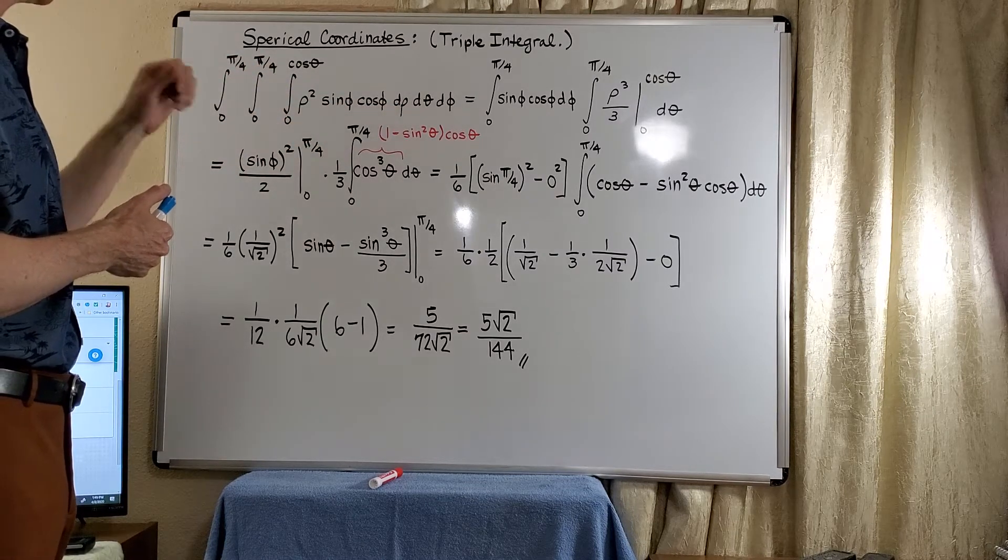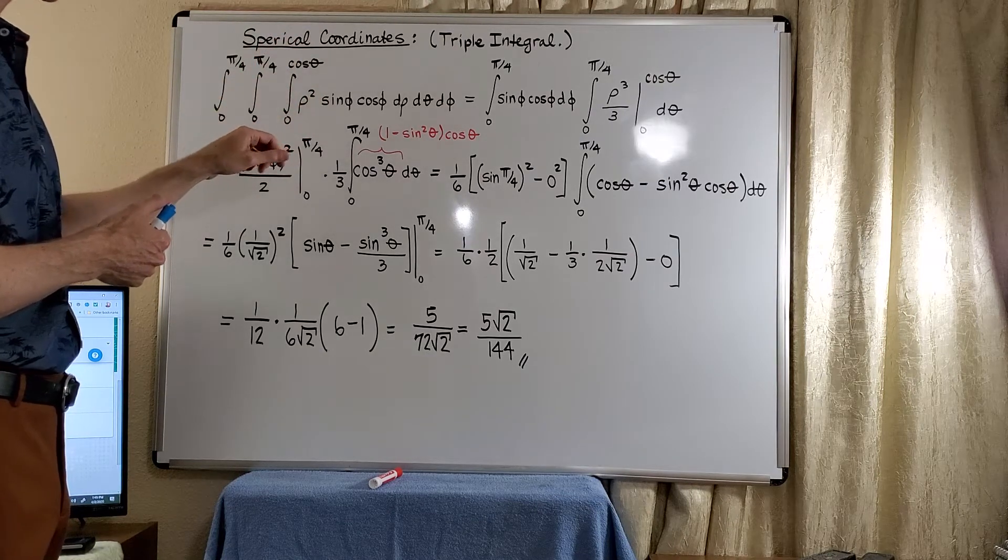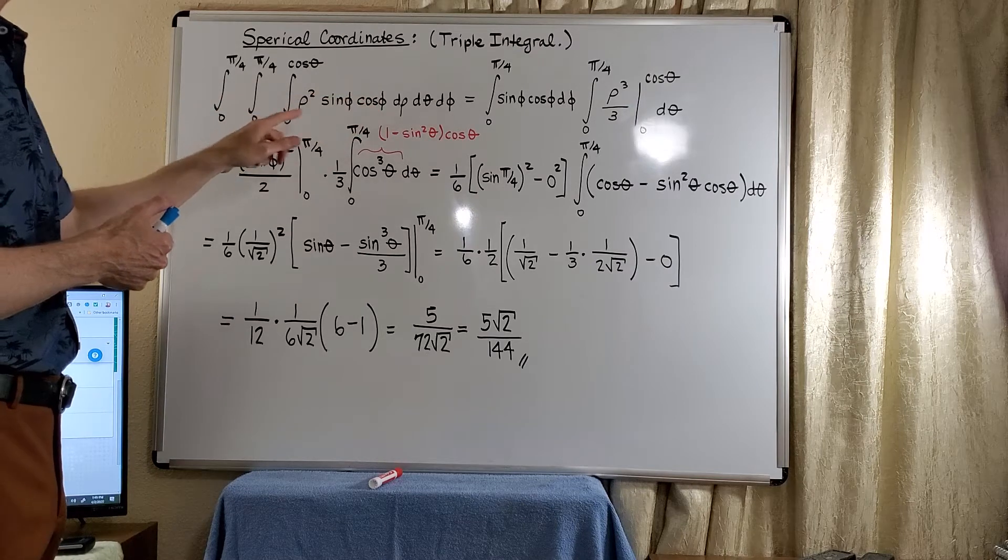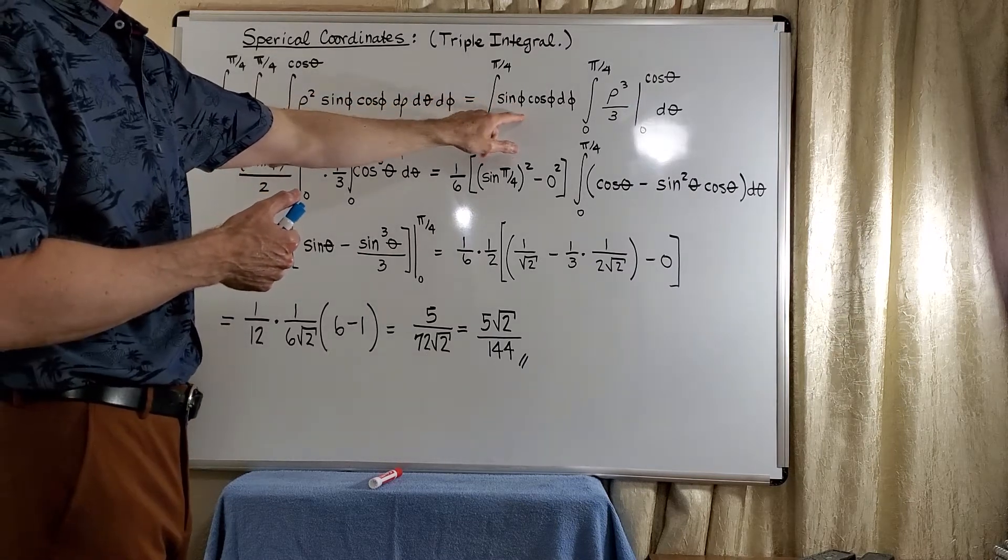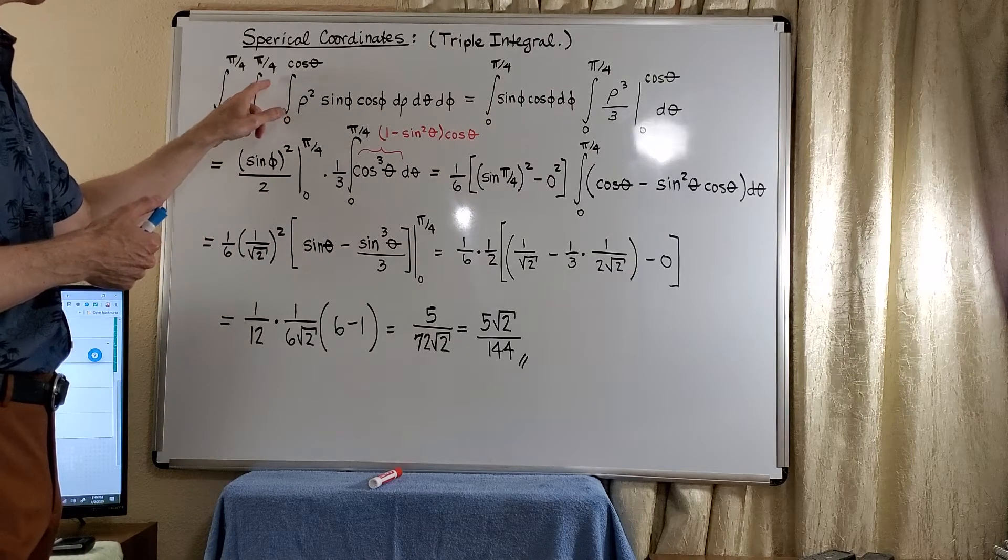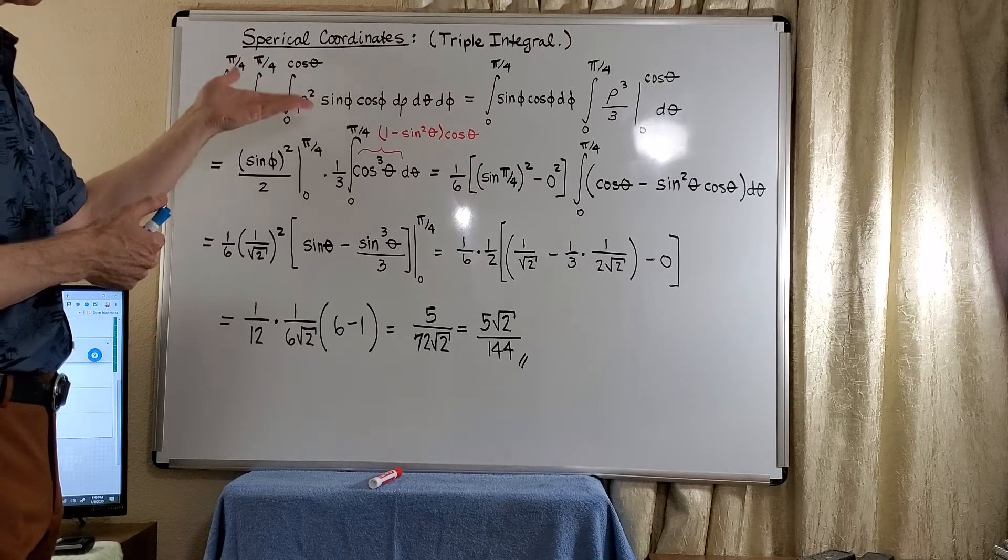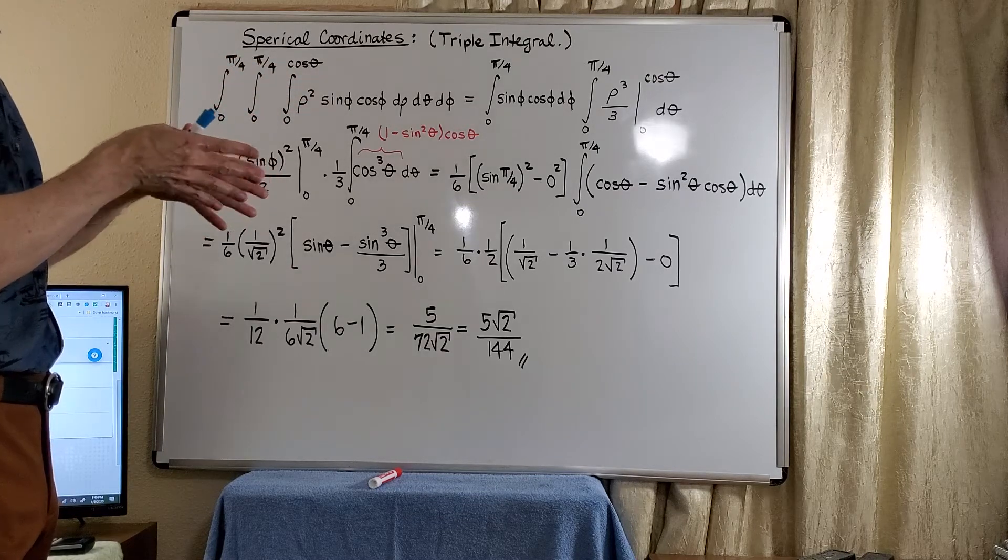So first off, we can notice that there's no dependence in the first integrals here, or these two integrals, on the phi. So we can go ahead and break off the phi integral, move it off to the left. But these two integrals do correlate rho and cosine theta, or rho and theta, so we need to keep them together.